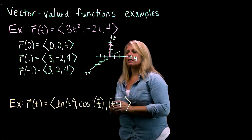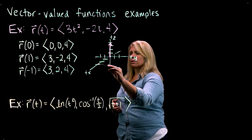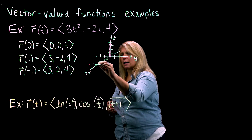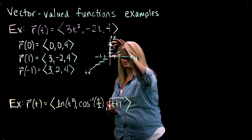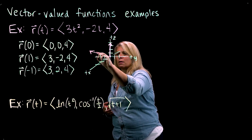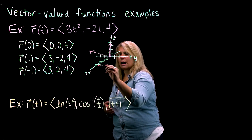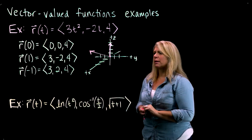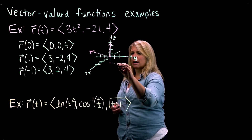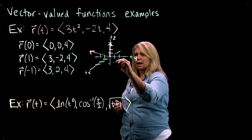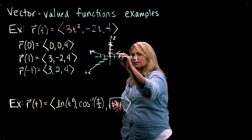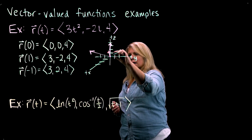So r of 0 is (0, 0, 4). With no compelling reason to put that vector elsewhere, we'll put it in standard position with its tail at the origin, going up 4 units. r of 1 would be out 3, left 2, and up 4 — so tail at the origin, terminal point at (3, -2, 4). And r of negative 1 is out 3, right 2, and up 4, though it's a little hard to see coming right out at us given the axis orientation.